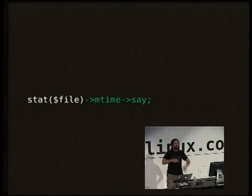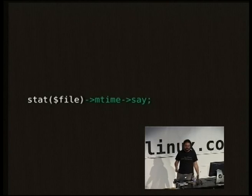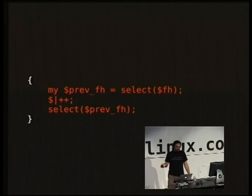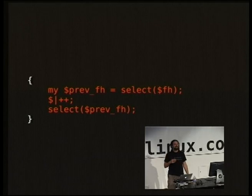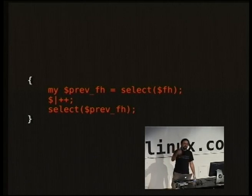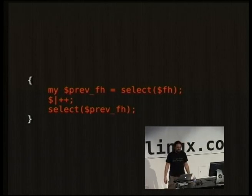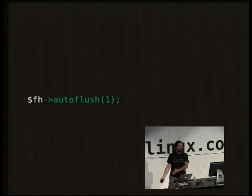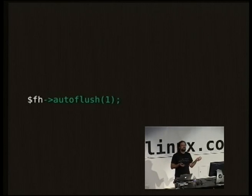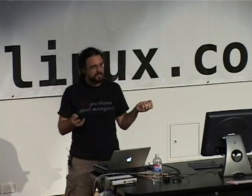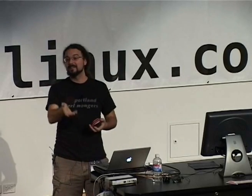Statting a file: same thing — it used to just return a blob of a dozen things, who knows which one is the modified time. Here is how in Perl 5 you make a file handle flush itself on every write. In Perl 5i, the file handle is an object, you call a method on it called autoflush. I realized last night that this functionality has been in Perl 5 for 13 years and nobody uses it because it's not turned on. You load one module and it's done, and the language automatically uses it for you. But now that it's there by default, you can actually start using it.